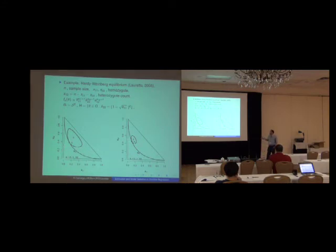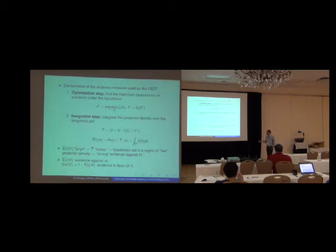On the other hand, if the hypothesis traverses a region of higher posterior density, then this region has a small mass and we have therefore a small evidence against the hypothesis. Well, the evidence in favor of the hypothesis is a complement.